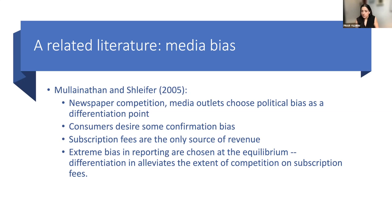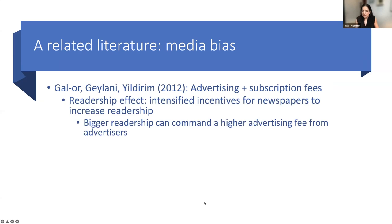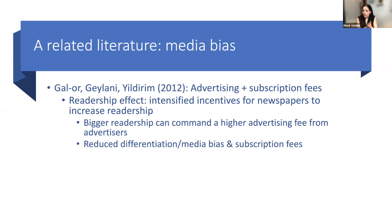In a follow-up paper with my co-authors, we thought about how product differentiation and competition in this market would change if newspapers made revenues from advertising as opposed to subscription, or from a combination. You can see already that the motivation to differentiate looks very different in a market where advertisers are looking for eyeballs — what you want to deliver to advertisers is broader reach and larger audiences. Compared to extracting surplus through higher willingness to pay under subscription, with advertising revenue you have the opposite effect: bigger readership commands higher advertising revenues, so you differentiate less, reduce media bias, and end up with lower subscription fees.